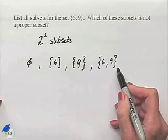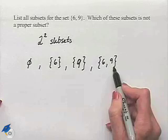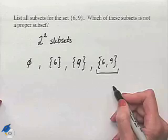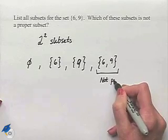So we end up with 4 subsets, and here they are listed. Which of the subsets is not proper? That would be the set that's equal to the set itself. This is not a proper subset.